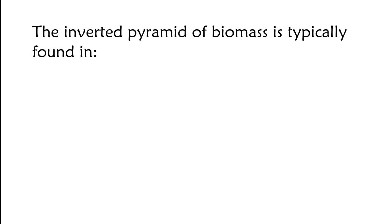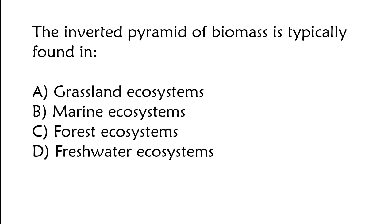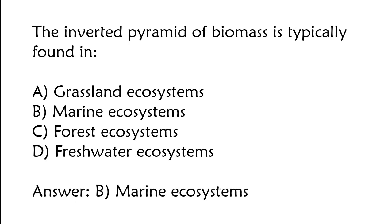The inverted pyramid of biomass is typically found in: A) grassland ecosystems, B) marine ecosystems, C) forest ecosystems, D) freshwater ecosystems. The correct answer is option B, marine ecosystems.